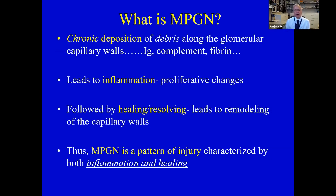Let's start with what MPGN is. Like most glomerular diseases, the way I look at most glomerulonephritis, they are what I like to think of as 'debris diseases' — things get deposited in the kidney, in the glomerular capillary walls, and they lead to inflammation. It could be immunoglobulins, could be complement, could be fibrin, or other things. Bottom line: stuff shows up in the glomerulus, you get inflammation, and the glomerulus tries to respond to it with healing.